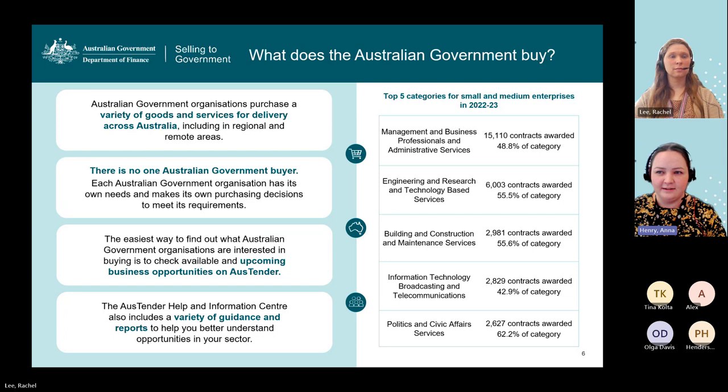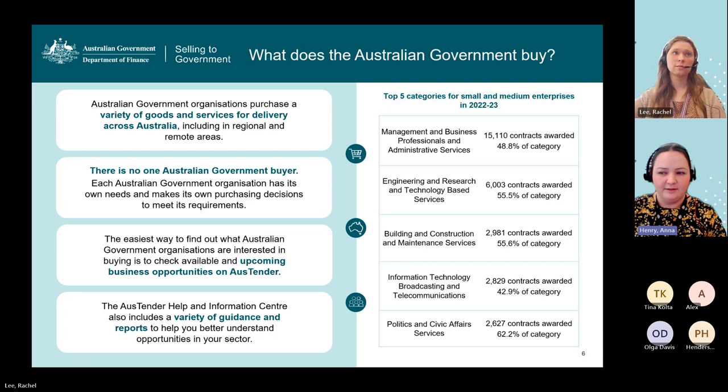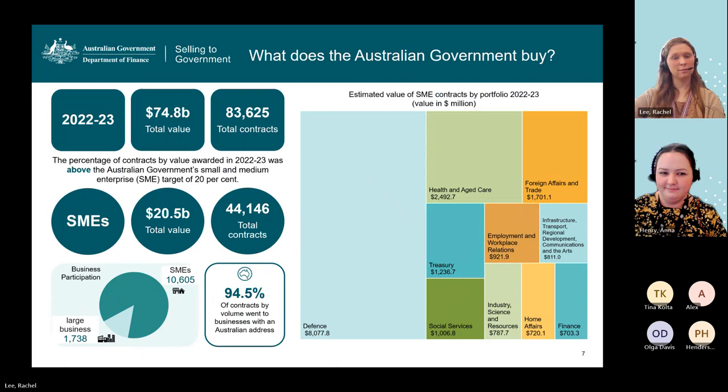The top five categories of contracts awarded to small and medium enterprises in the 2022–23 financial year were: management and business professionals and administrative services; engineering and research and technology-based services; building and construction and maintenance services; information technology, broadcasting and telecommunications; and politics and civic affairs services.